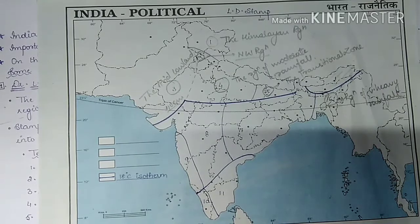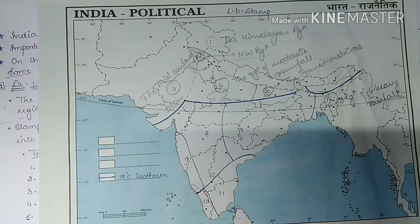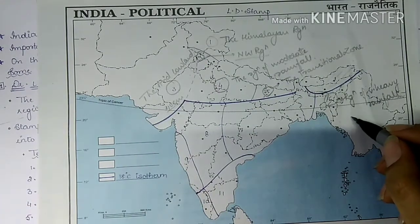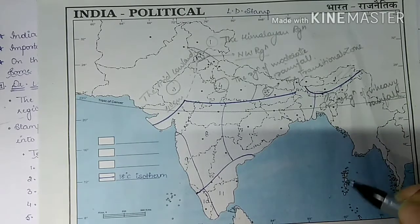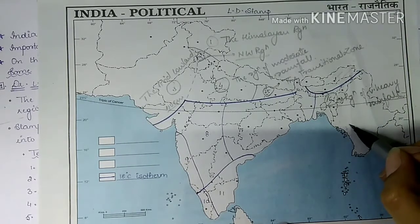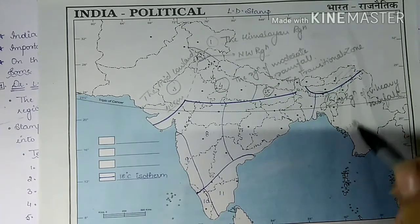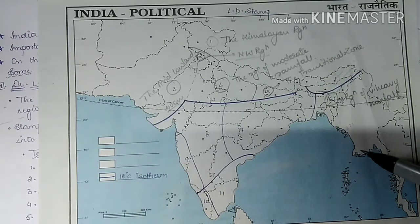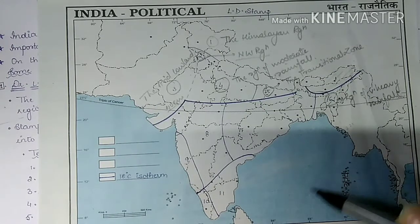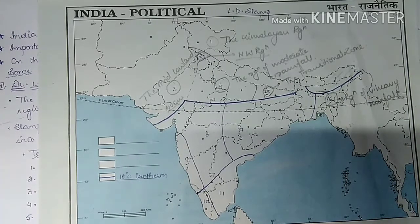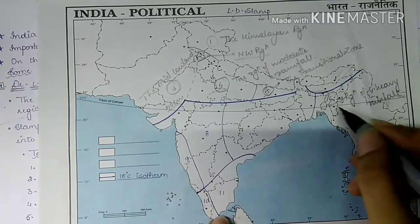Some exceptional places like Mawsynram and Cherrapunji receive rainfall well above 1000 centimeters — Cherrapunji records 1102 centimeters and Mawsynram records 1221 centimeters. The temperature remains around 18 degrees Celsius in January and rises to 30 to 35 degrees Celsius in July.